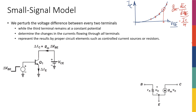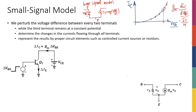For the second type of analysis, we need a different model than what we've seen before. As a reminder, the large signal model looked like this: a diode and a voltage-dependent current source, where that current source equals Is times exponential of VBE over VT, with VBE being the voltage across the diode. The terminals are emitter, collector, and base.